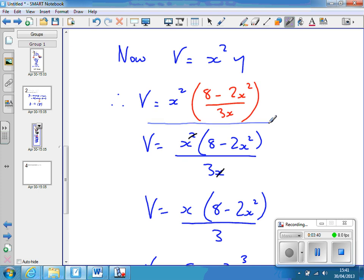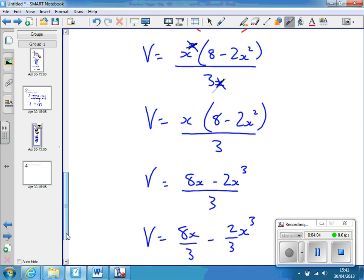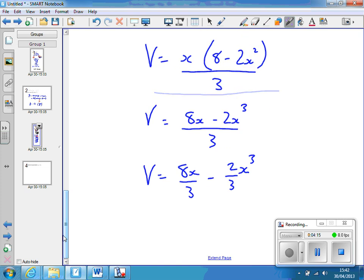But at some point, we're going to want to differentiate this, so let's try and simplify it and get it to two separate terms. I can think of this as x squared into 8 minus 2x squared, all over 3x, which is this line, which means I can actually cancel out 1x top and bottom, leaving volume equals x brackets 8 minus 2x squared over 3. Then I multiply out the brackets and separate out the fractions because it's all over 3, which is the expression you're given.